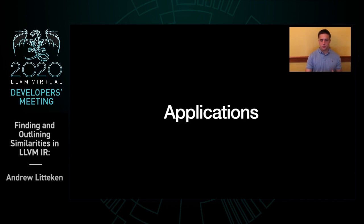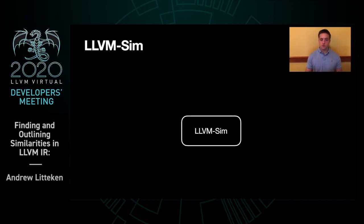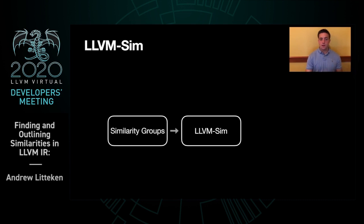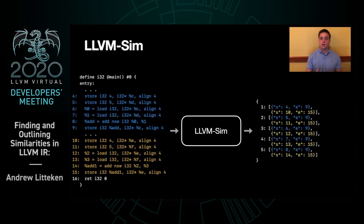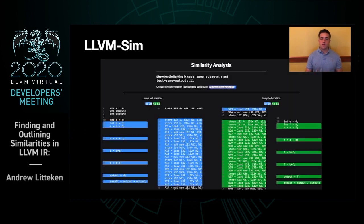So let's move into applications. The first is a visualizer for similarity in a module. It accepts the similarity and then outputs a similarity report. In this case, we have the program on the left with the similarity groups highlighted in blue and gold, and the corresponding JSON file on the right with an entry for each similarity group. With this JSON and some debug information, we can create a visualizer for similarity in IR code and source code since we can link it back to the source.